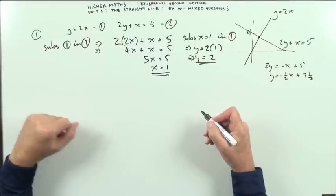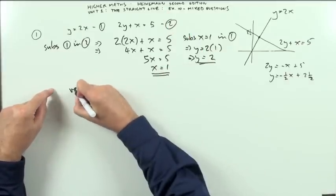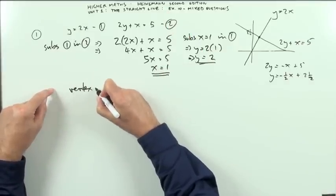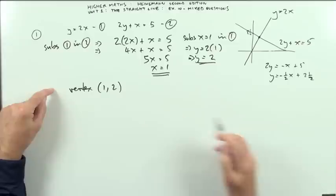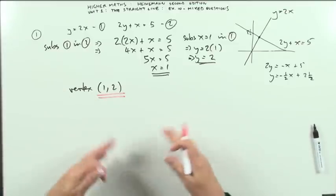So if the question said find the point of intersection of the two lines or the vertex, in this case I can write down the vertex is going to be the point 1, 2. And that's the answer. So I'll underline that. That's question 1.